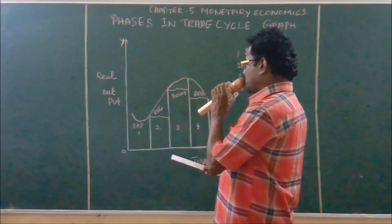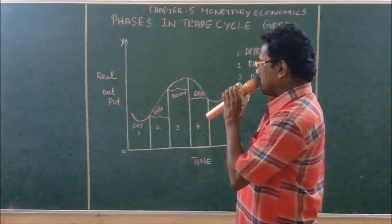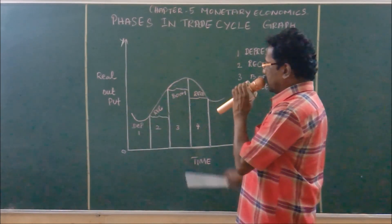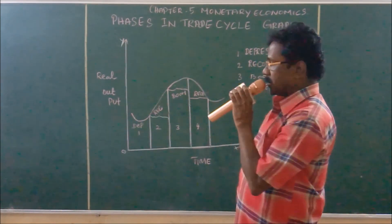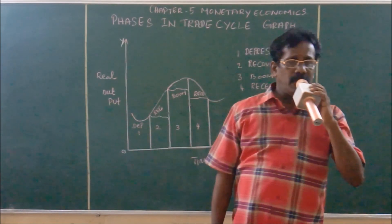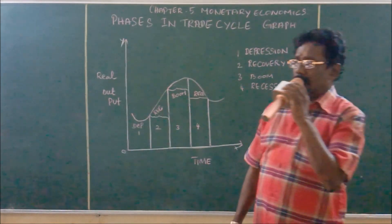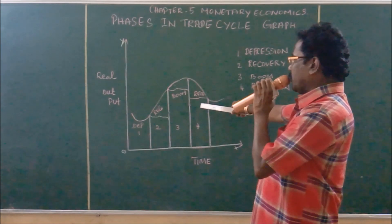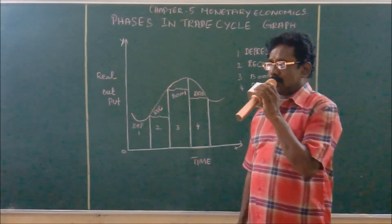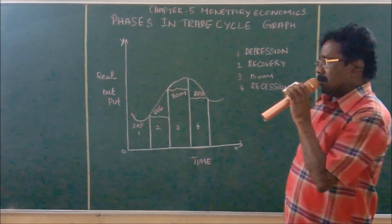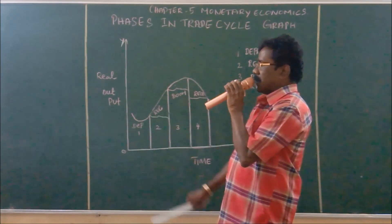Before drawing the graph, you must know the meaning of trade cycle. You have to write one by one about the trade cycle — first, what is trade cycle, what is the meaning, what is the definition. Then only draw the graph and explain each stage one by one. This shows all the situations that have taken place in the economic activity of a particular nation.